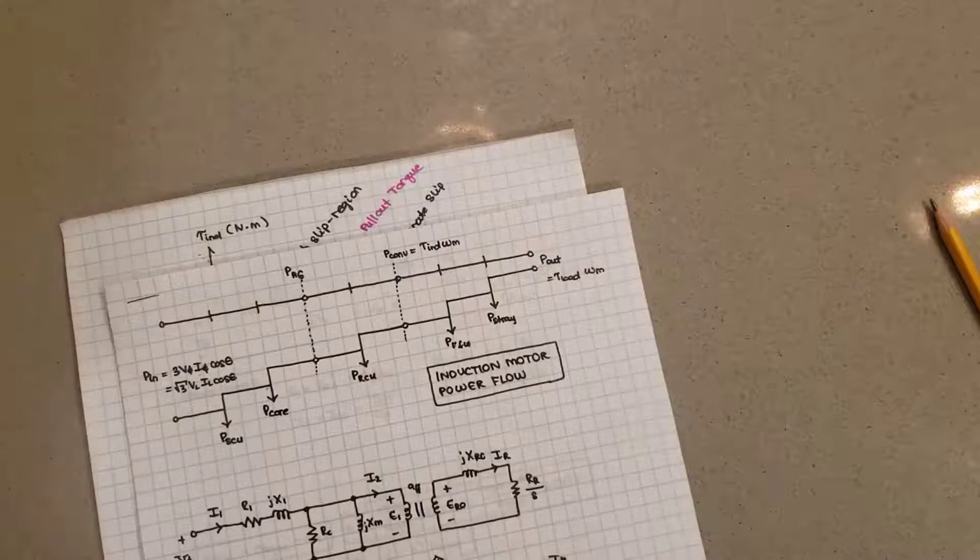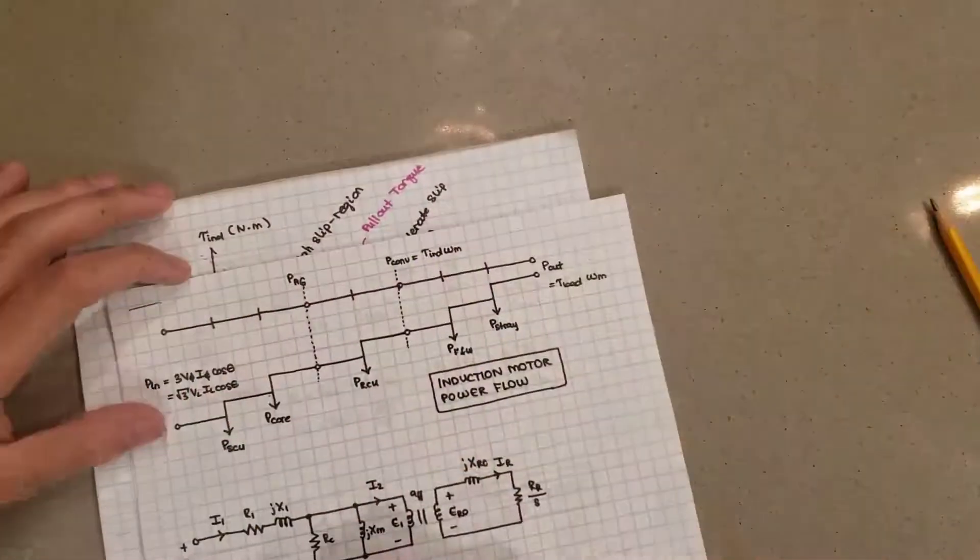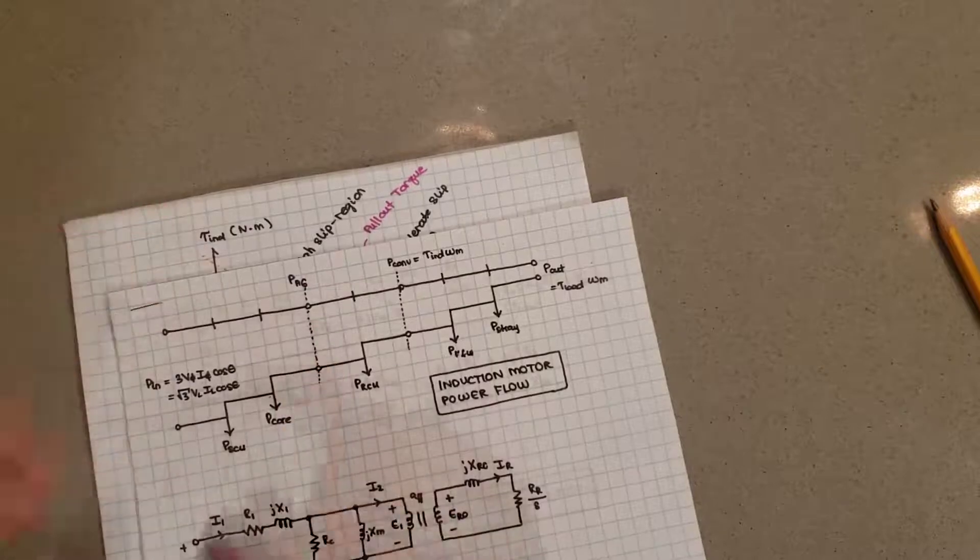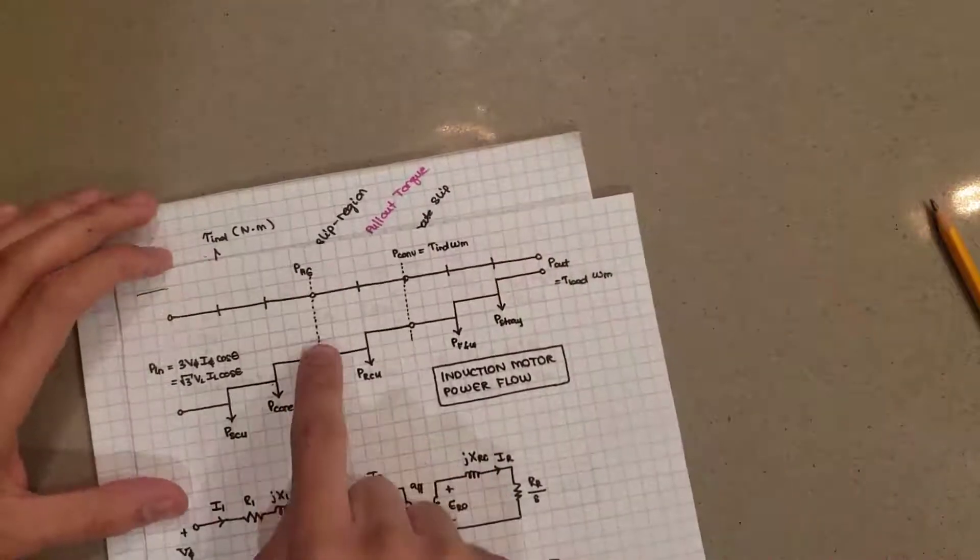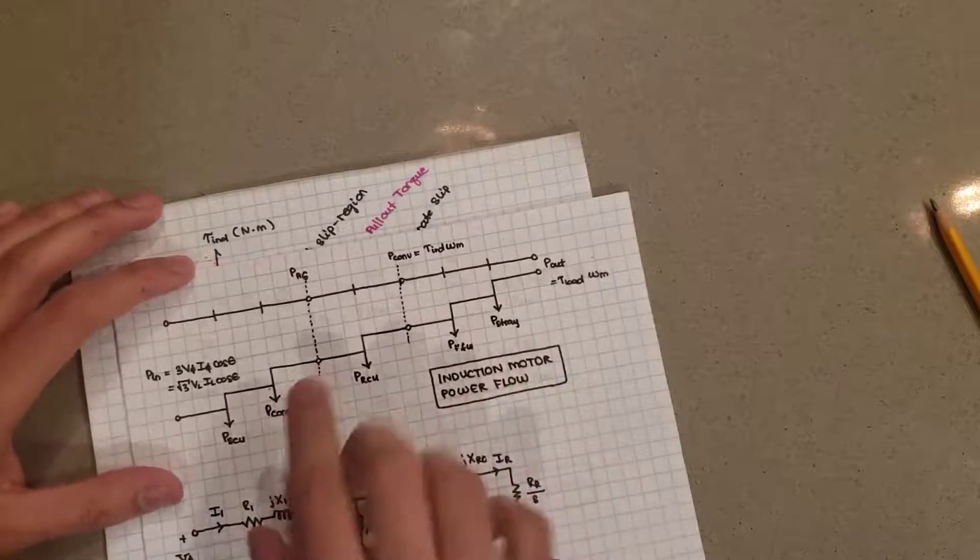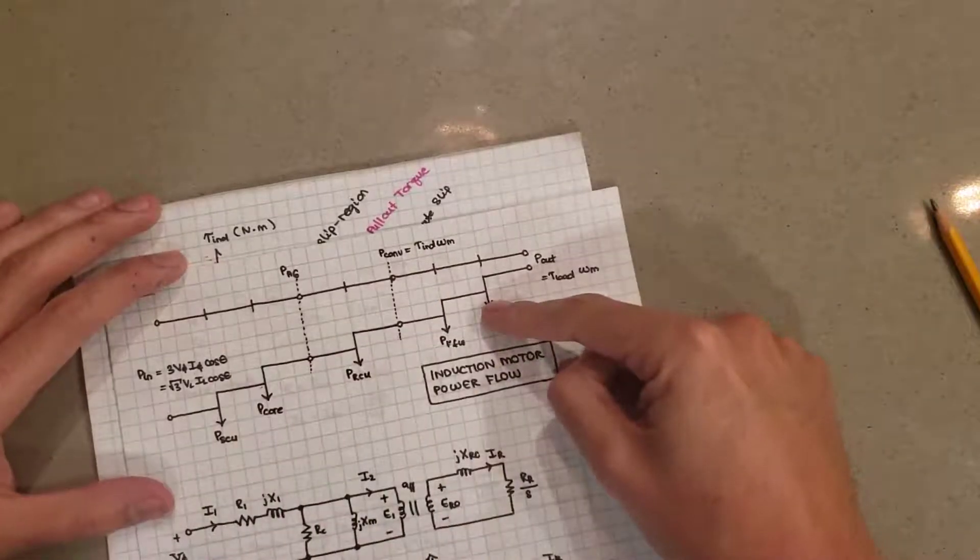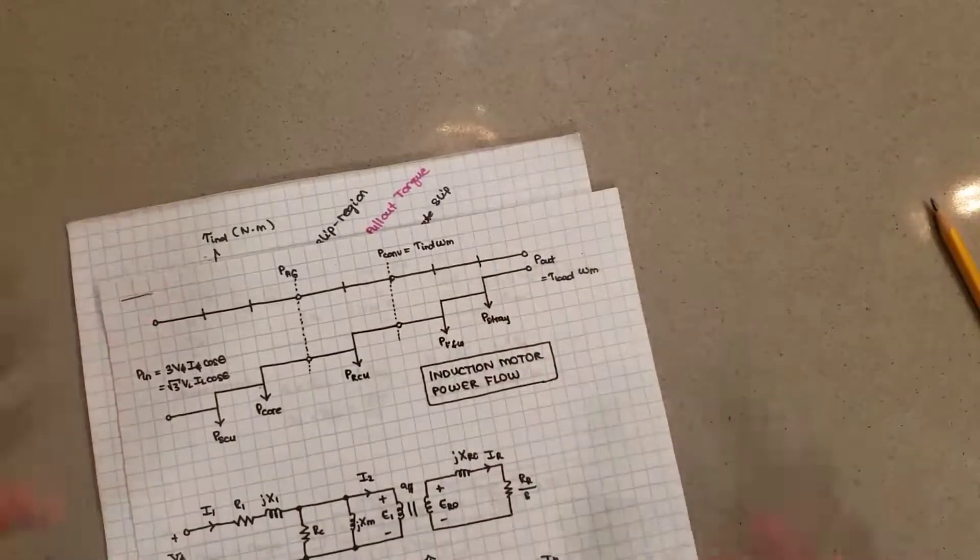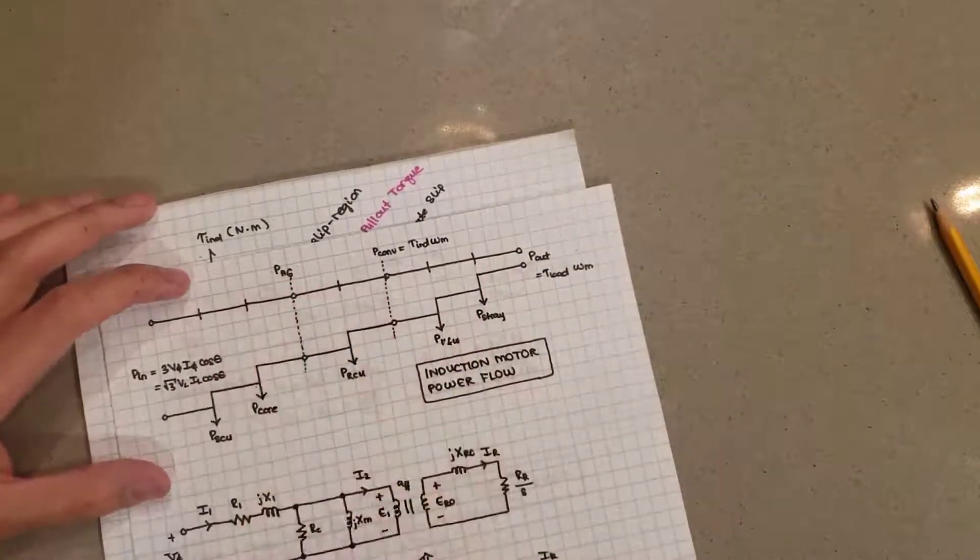So there you go, you have your air gap power over here. That's what's ready to be transferred wirelessly over the air gap. We're no longer electrically connected here. This is pure wireless power transfer. So that's what's going to be transferred wirelessly. So we get to the rotor. If that was an immediate path to the mechanical power, then that's great. Then all of this air gap power is going to go to mechanical power.